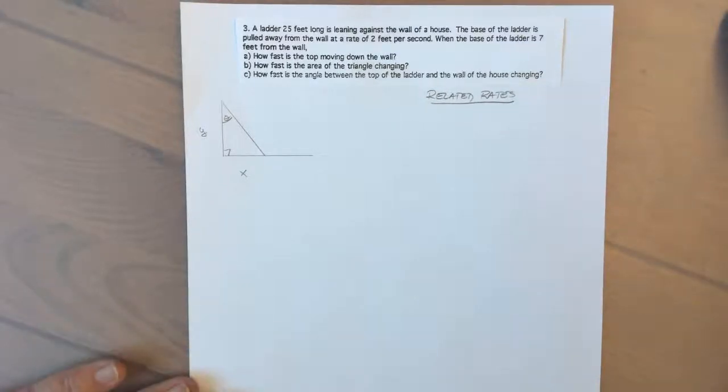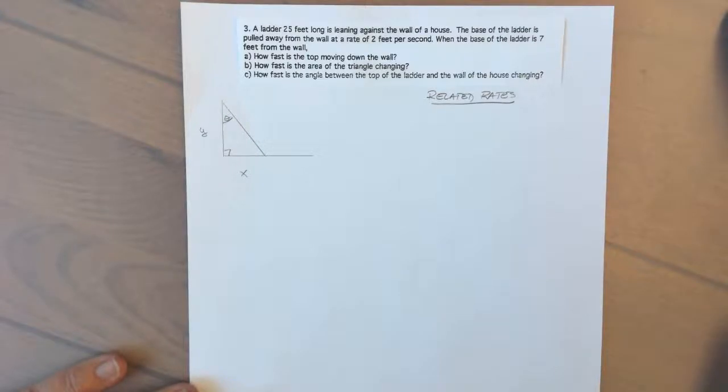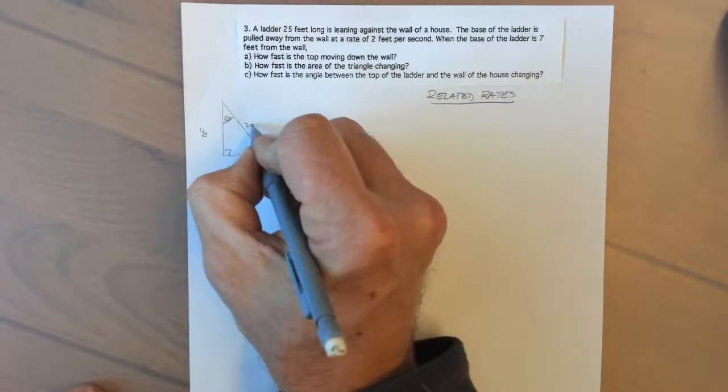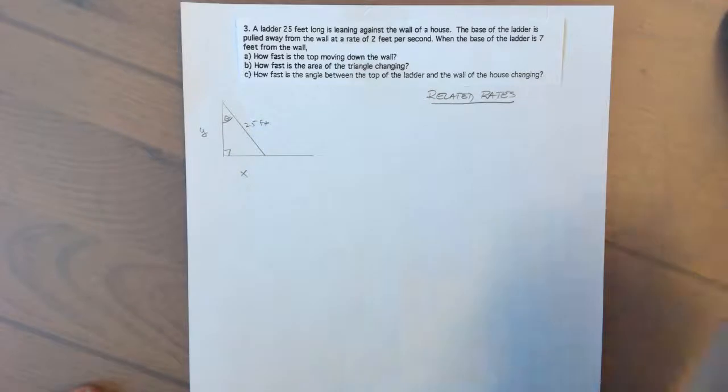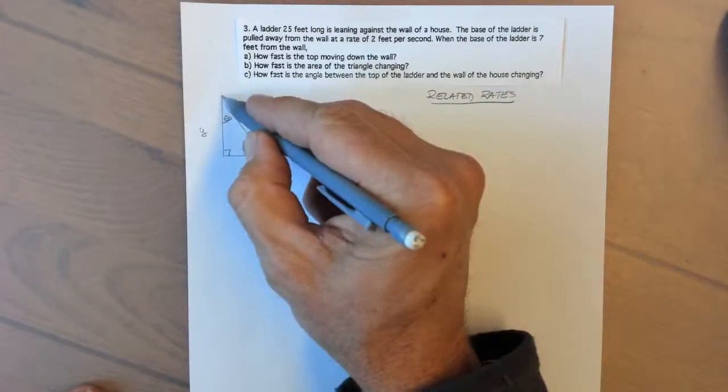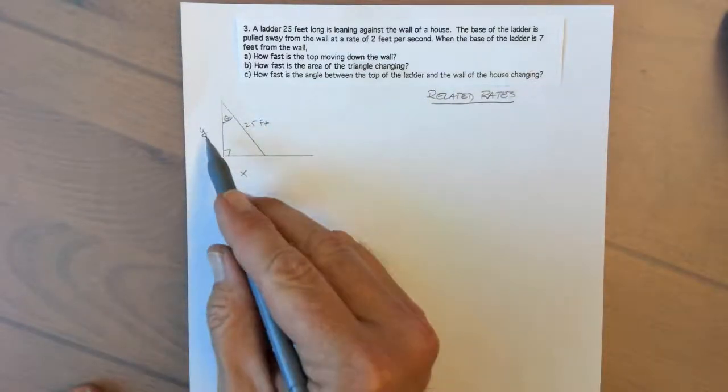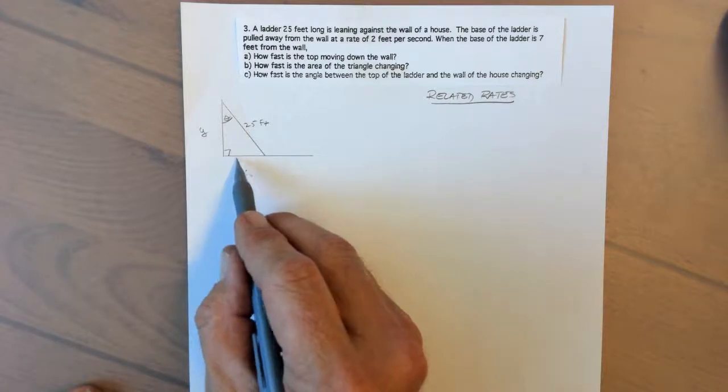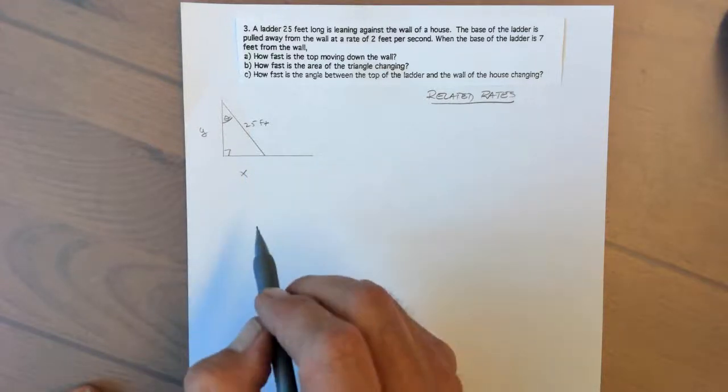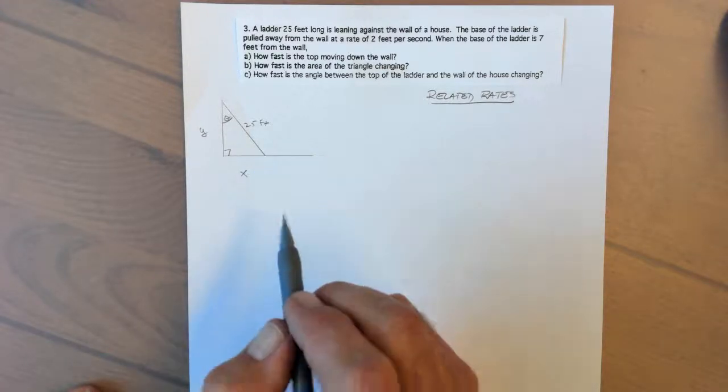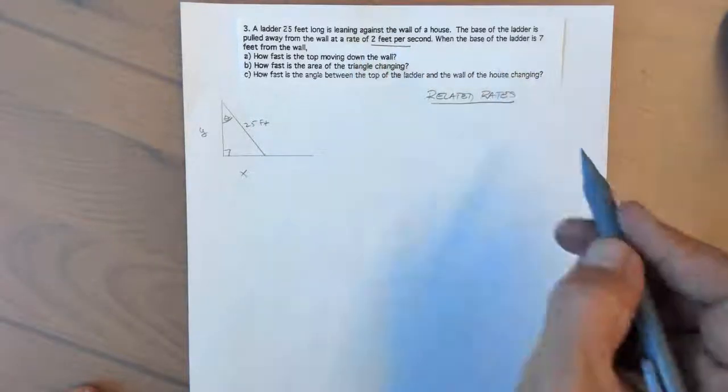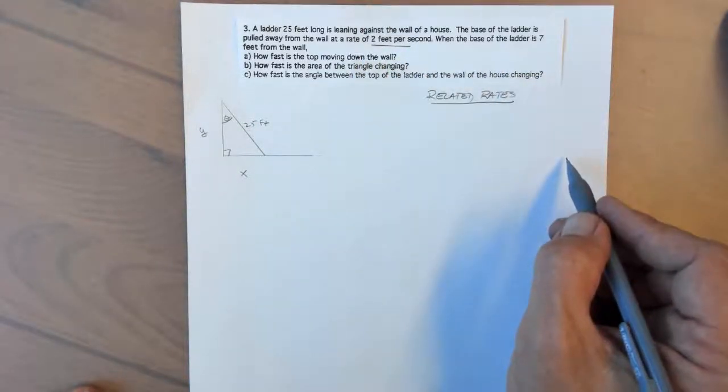We have another related rates problem here involving a triangle and an angle. We have a ladder 25 feet long leaning against the wall of a house, which I labeled y. The base of the ladder on the ground is x. It is being pulled away from the wall at a rate of 2 feet per second when the base of the ladder is 7 feet from the wall, so when x equals 7.